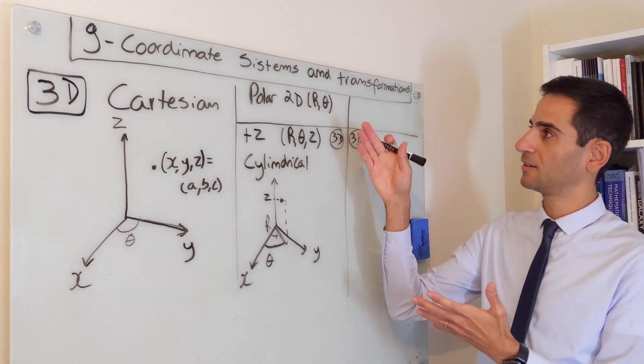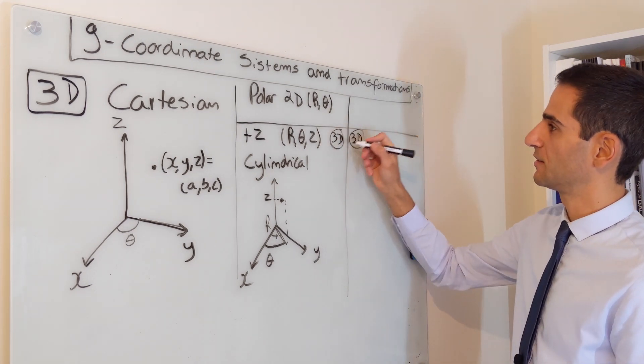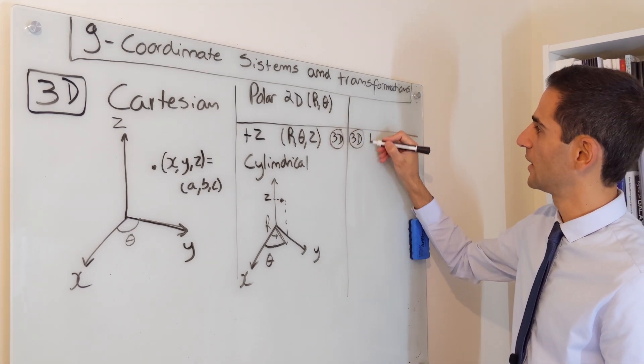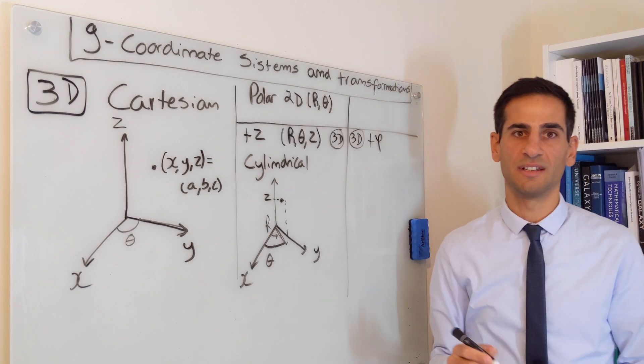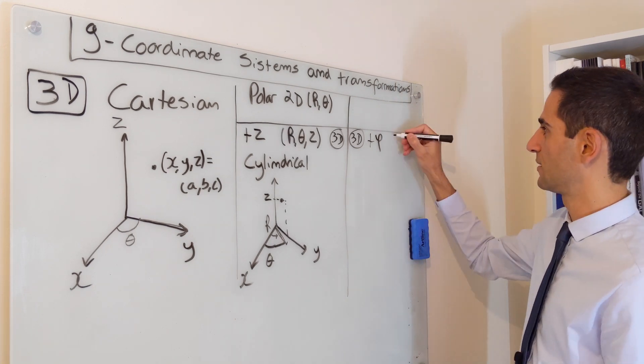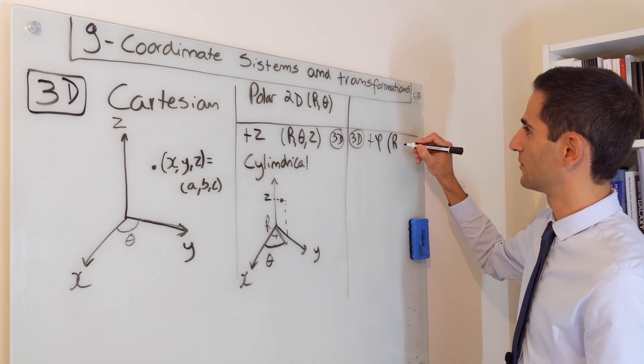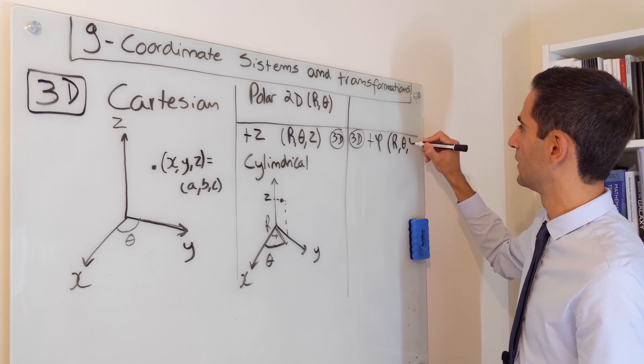The other way to expand polar 2D is instead of adding z we add another angle, say phi. In this case we're looking at coordinates given by r, theta and phi.